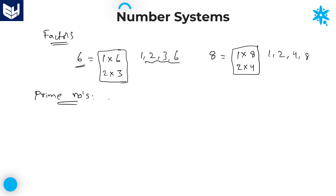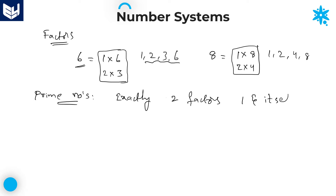Prime numbers are numbers which have exactly two factors — that is one and itself. For every number, one is a factor and itself is a factor. So for prime numbers, those must be the only two factors.